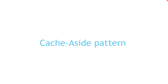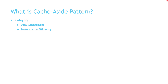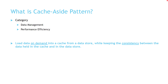Hi everyone, my name is Hassain, and in this video we are going to talk about the Cache-Aside Pattern. Cache-Aside Pattern comes under two categories of cloud design patterns: data management and performance efficiency. The purpose of Cache-Aside Pattern is loading data on demand from the data store into the cache, while maintaining the consistency between the data stored in the cache and the data stored in the data store.